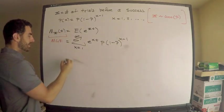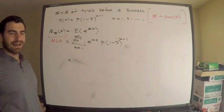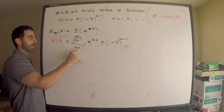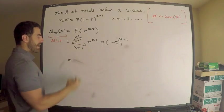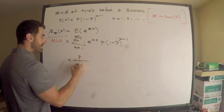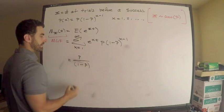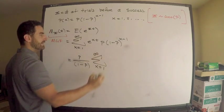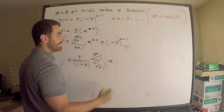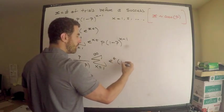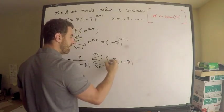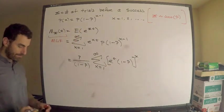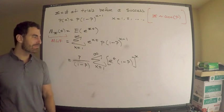Let's do some algebra and clean this up. I can factor out anything that does not depend on the index x. What I can do is factor out a p divided by 1 minus p, times the sum from x equals 1 to infinity of e to the t times 1 minus p, all raised to the x.